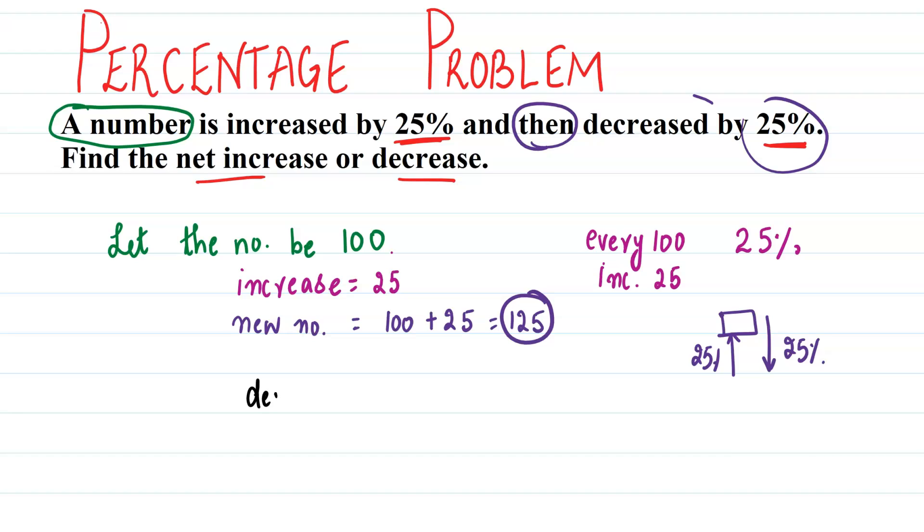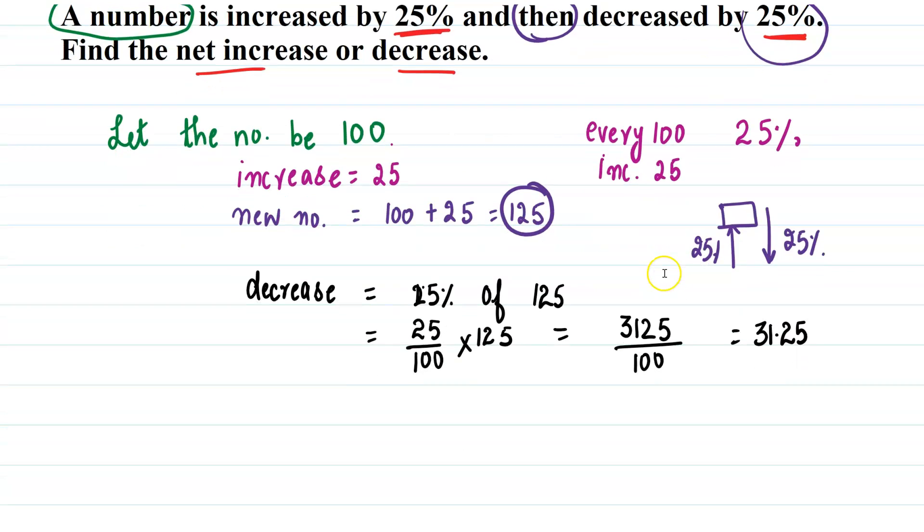So now we will decrease this number by 25 percent. So now how to decrease 125 by 25 percent? First we'll have to find out the decrease. How much is the decrease? How will we find it out? 25 percent of 125. That would be equal to 25 over 100 into 125. So we can multiply 25 and 125, so we get 3125 divided by 100, which can be written as 31.25.